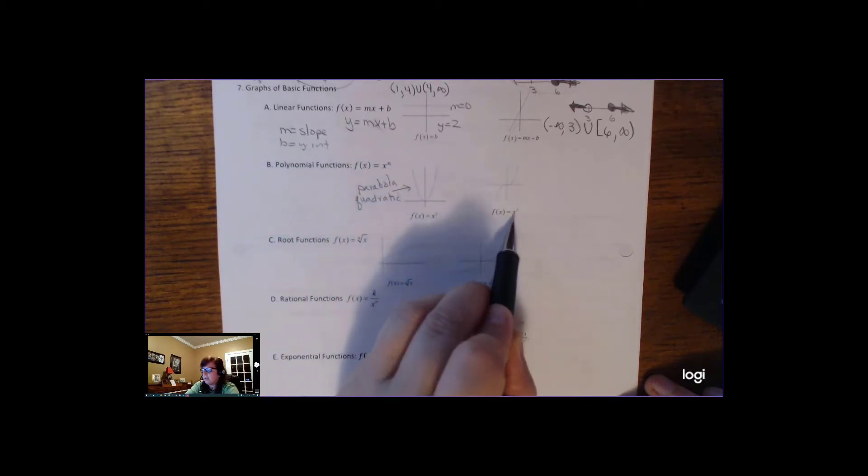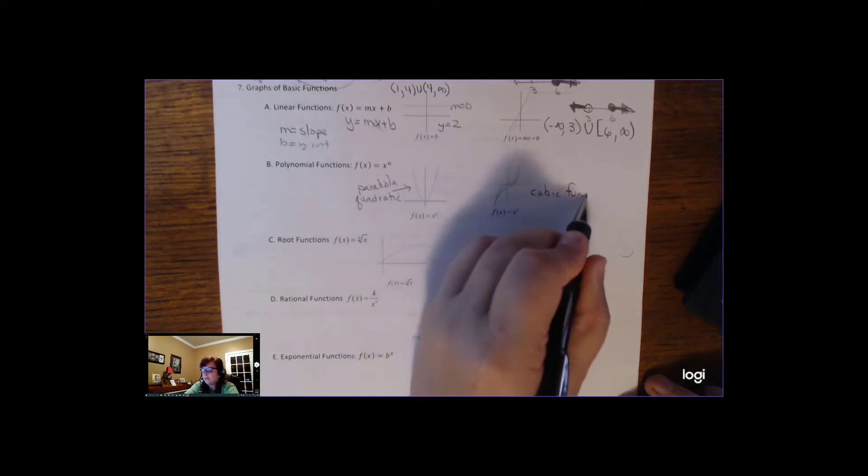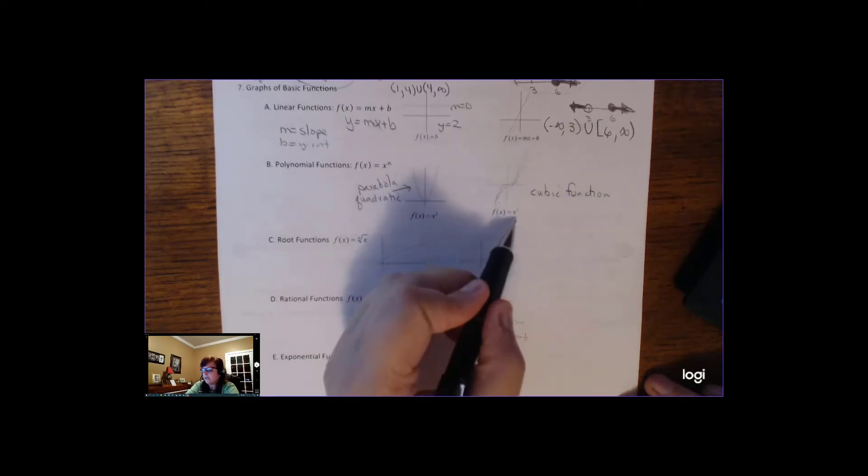And this one, you've got x cubed, and so it kind of has that n behavior where you start down and go up. That's a polynomial function, or we call it a cubic function because it's degree 3 here.